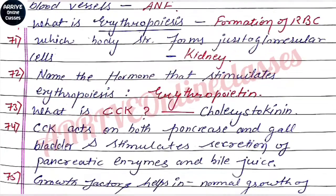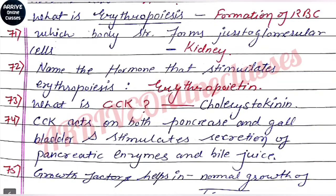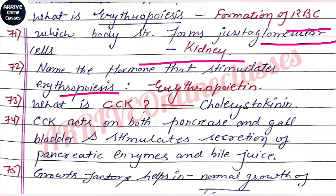Erythropoiesis is the formation of red blood cells (RBCs). The body structure that forms them via juxtaglomular cells is the kidney, which we study in detail in the excretory system. The hormone that stimulates erythropoiesis is erythropoietin.